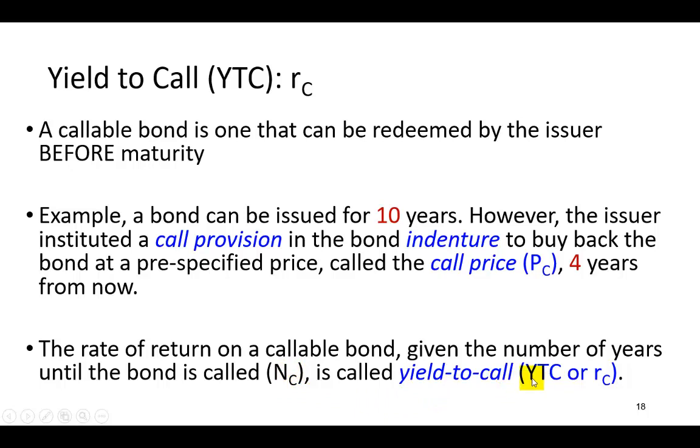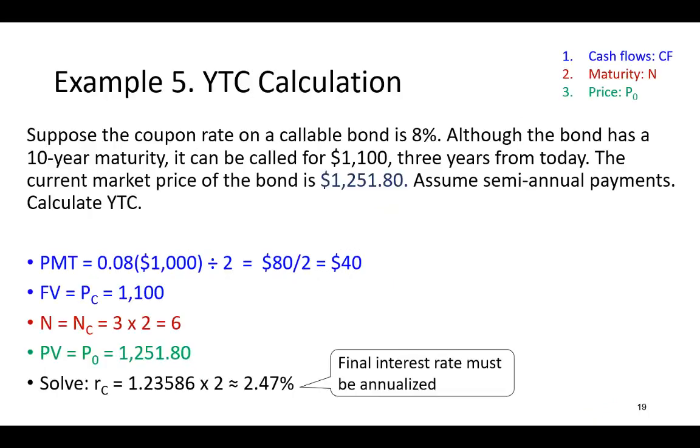And the yield to call, we're going to use YTC or r subscript C to denote the required rate of return on a callable bond, a.k.a. the yield to call. So here's a quick example.